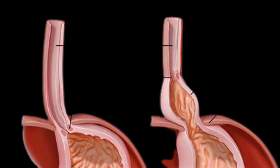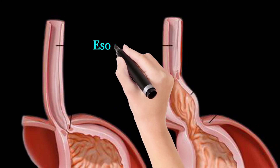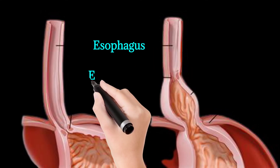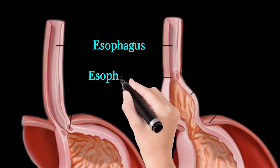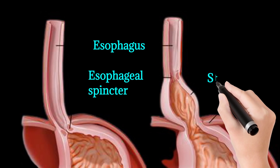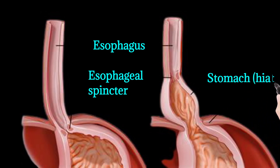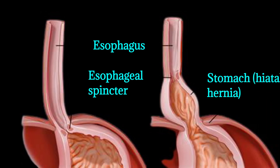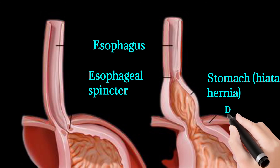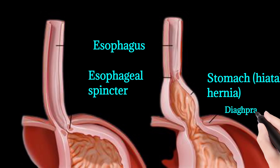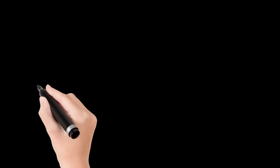This is the comparison between a normal and an abnormal stomach. This is the esophageal sphincter, which is present just above the hiatal opening. This is the diaphragm. So this is all about hiatal hernia.